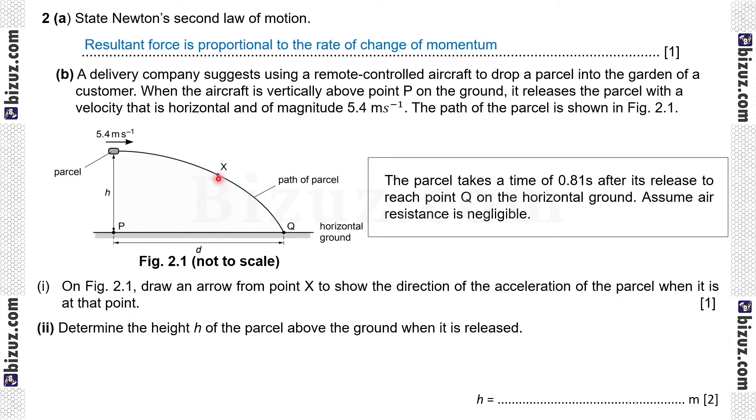So when the parcel is dropped then only force of gravity acting on it because air resistance is negligible. That's why the force at X or direction of acceleration is vertically downward.